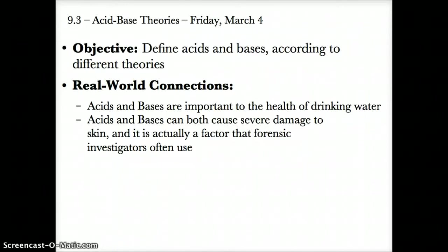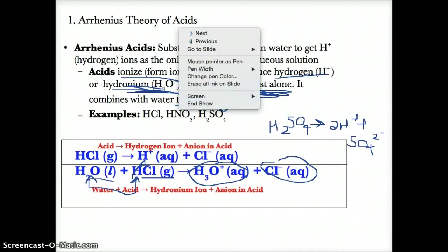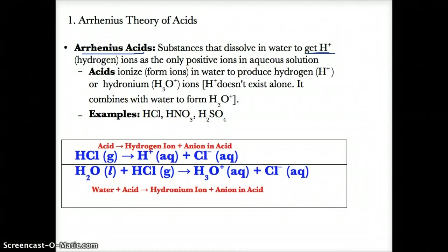9.3 acid-base theories. Let's first talk about the Arrhenius theories of acids. Arrhenius acids, based on the Arrhenius theory, are described as follows: Arrhenius acids are substances that dissolve in water to produce H+, or hydrogen ions, as the only positive ions in aqueous solution.